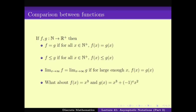Consider this: if f(x) equals x cubed and g(x) equals x cubed plus (minus 1) to the power x times x squared. Since x varies over all natural numbers, for some x, g(x) is less than f(x). On the limit they are not the same, but are they kind of similar or not? To formally address this, we need a formal set of definitions — this is what we call asymptotic notations.